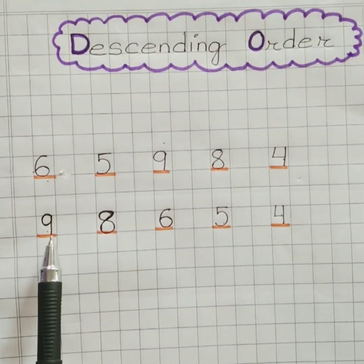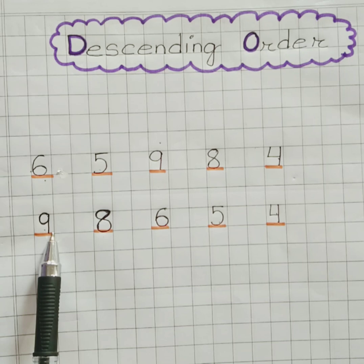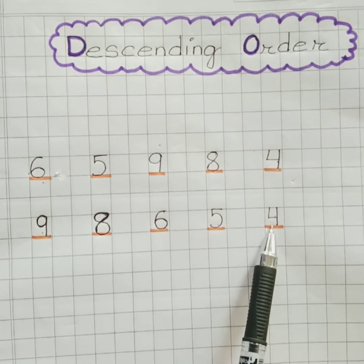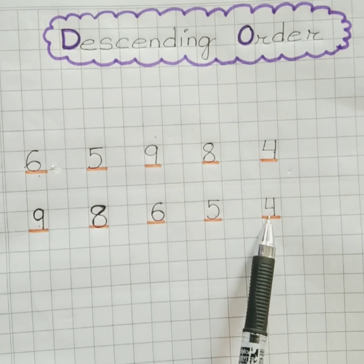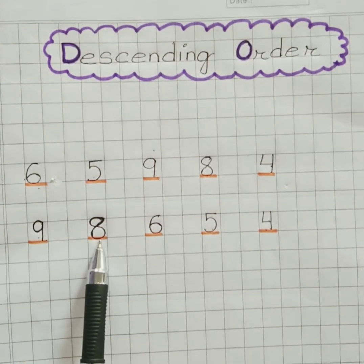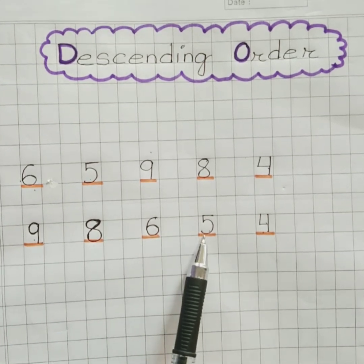So here, 9 is the greatest number and 4 is the smallest number. Thus, the final sequence of descending order is 9, 8, 6, 5, and 4.